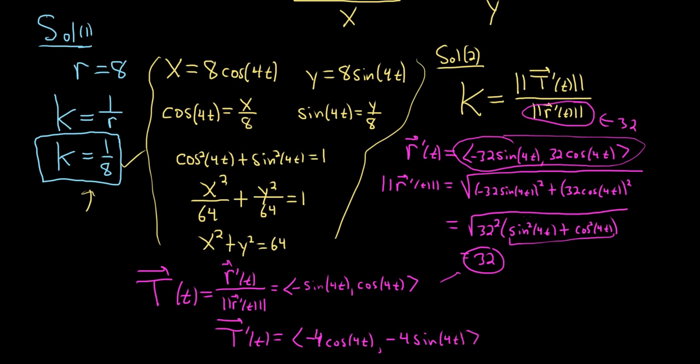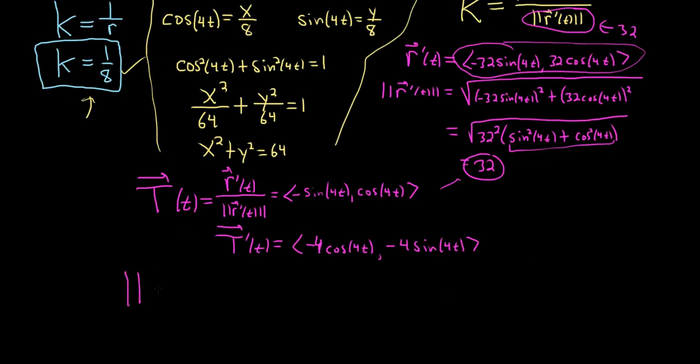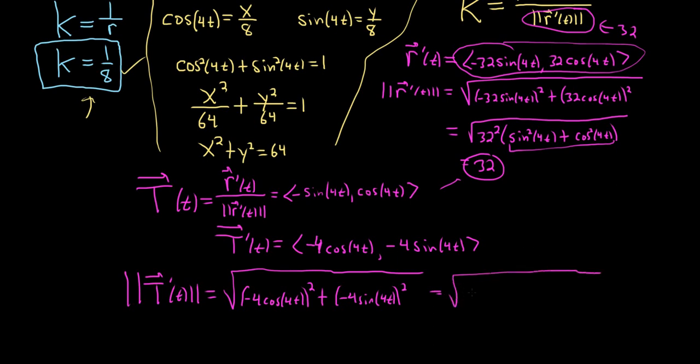And then we take the magnitude of this. So the magnitude of this thing is going to be 4. If you kind of see how the other ones work, it's the same thing. You take the square root and you square each of the components like this. And you do this one as well. Negative 4 sine 4t. And then so you just get 16. And you can pull out the 16.